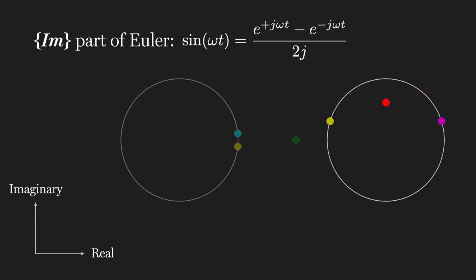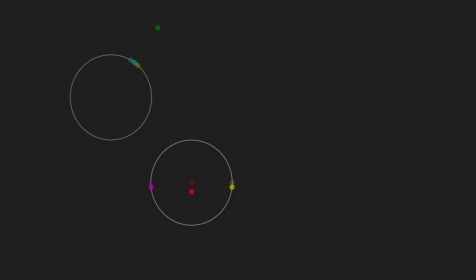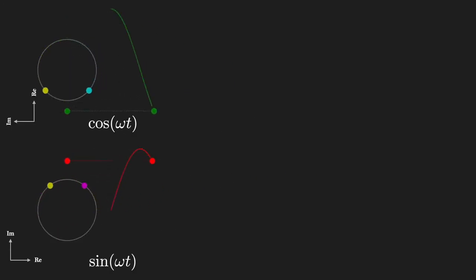Similarly, the imaginary part is also represented by two phasers of opposite frequencies, resulting in the sine that stays on the vertical axis. If we tilt the real axis of our cosine to vertical and plot the sum of phasers over time, we can see that these sums are, in fact, cosine and sine.